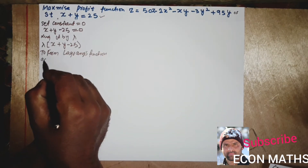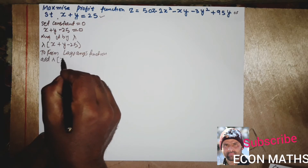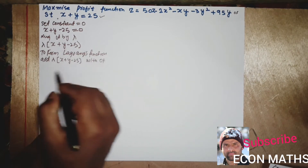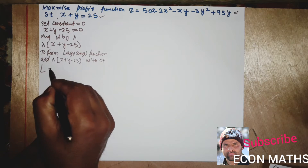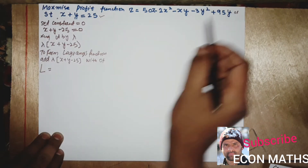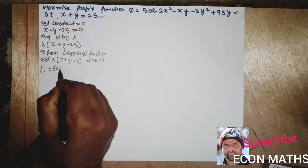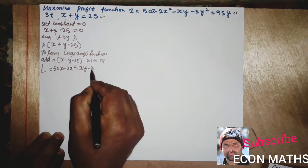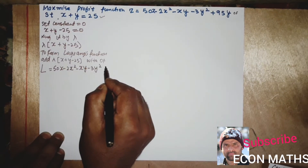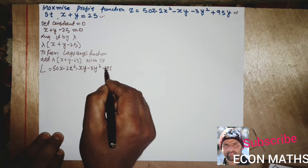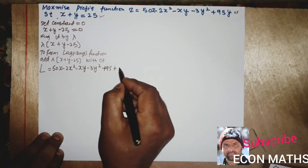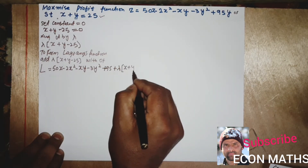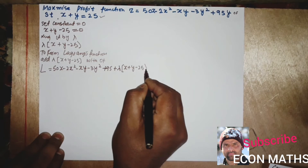To form the Lagrangian function, we add this constraint term to the given objective function. So our Lagrangian function becomes: L = 50x - 2x² - xy - 3y² + 95y + lambda(x + y - 25).